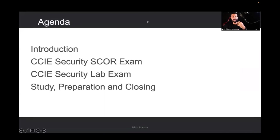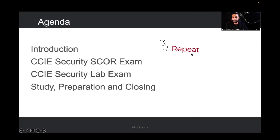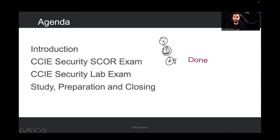Before I start today's agenda, a few things about the chat window. We're going to use abbreviations: if you understood something, type Y for yes. If you want me to repeat something you didn't understand, type R for repeat. When I ask you to make notes, type D for done — so I can confirm you've completed it.